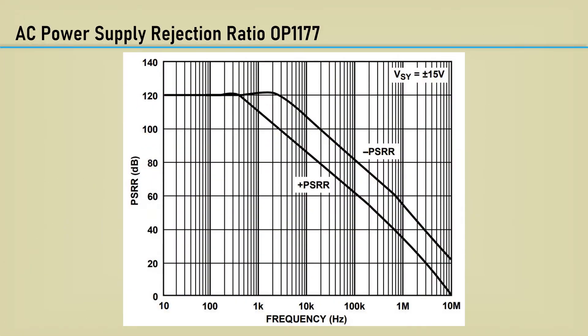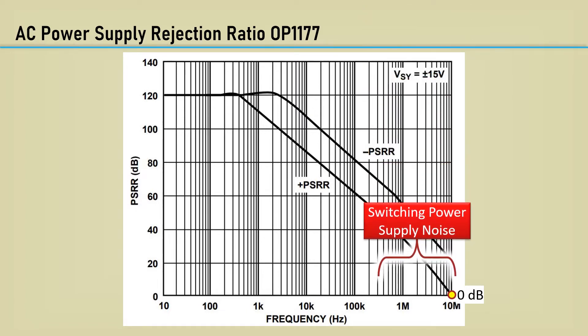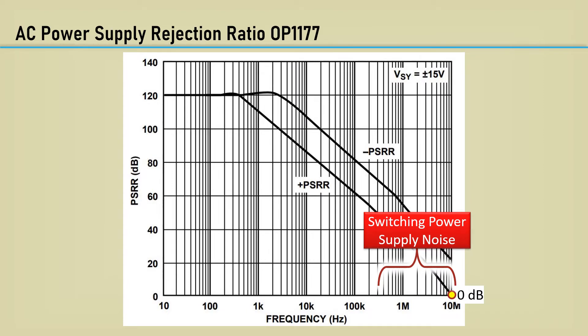The power supply rejection ratio degrades with increasing frequency. Some op-amp data sheets do not even have this chart. The PSRR for the plus rail is usually different but characteristic compared to the negative power input at high frequencies. The rejection is 0 dB at 10 MHz for the positive power input. You are likely to have some switching power supply noise in this spectrum, and the op-amp will have no inherent rejection to it. It's imperative to do a good job filtering and decoupling the power for op-amp circuits.